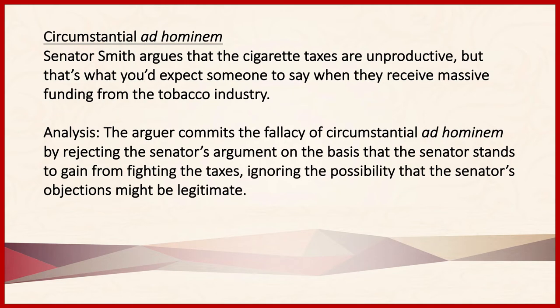The next fallacy is circumstantial ad hominem. As noted earlier, circumstantial ad hominem involves a claim that somebody has a stake in what they're saying, and they wouldn't be saying what they are without having that vested interest. For example, Senator Smith argues that the cigarette taxes are unproductive, but that's what you'd expect someone to say when they receive massive funding from the tobacco industry. The fact that Senator Smith receives massive funding from the tobacco industry does give us a reason to be suspicious of his motives. However, this has nothing to do with the validity of Senator Smith's position — there might actually be very good reasons for what the Senator says. So if we simply reject the person's position out of hand because they have a vested interest, that's fallacious.